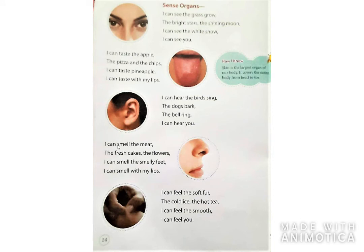Next organ is nose. I can smell the meat, the fresh cakes, the flowers, I can smell the smelly feet. अब हमारी next organ है nose। Nose से हम अच्छी smell और बुरी smell दोनों sense कर सकते हैं।